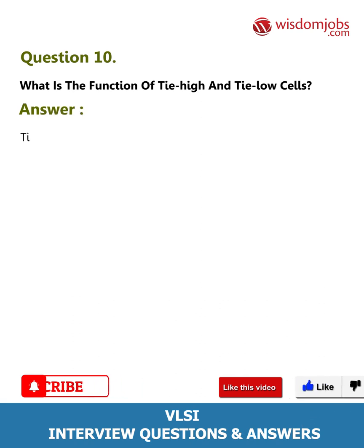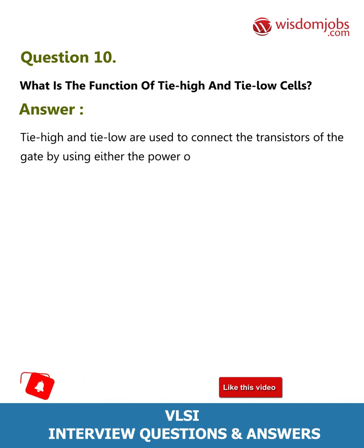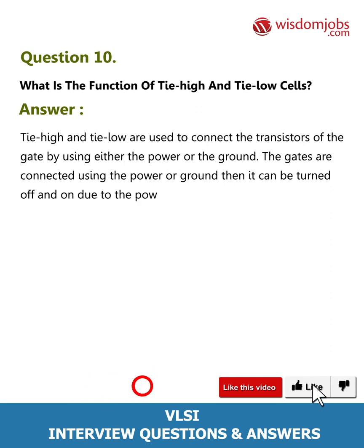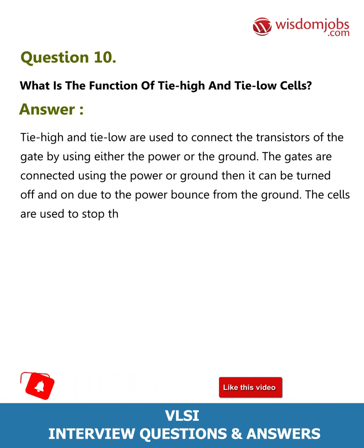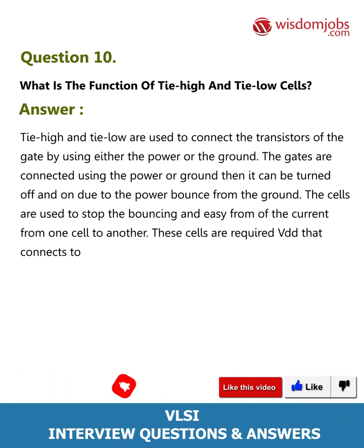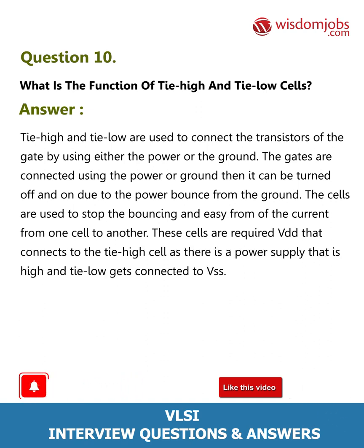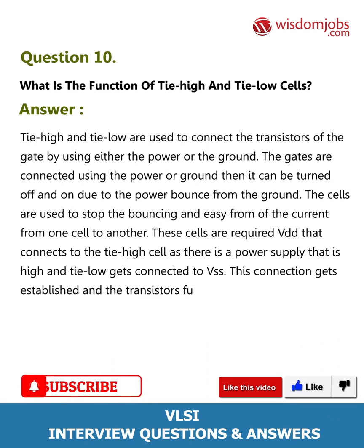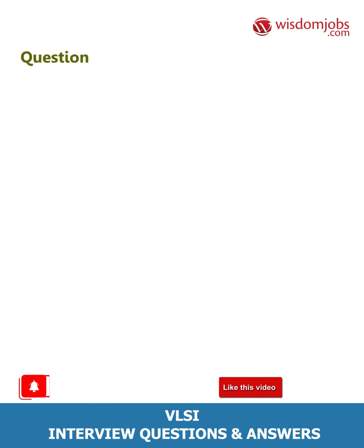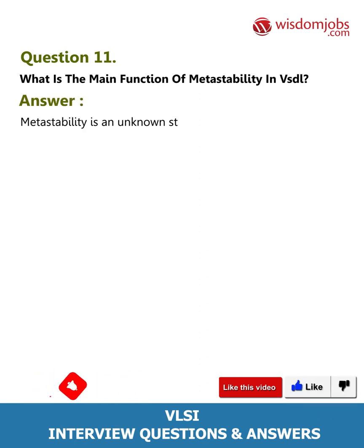Question 10: What is the function of tie high and tie low cells? Answer: Tie high and tie low cells are used to connect the transistors of the gate using either power or ground. When gates are connected using power or ground, they can be turned off and on. These cells stop the bouncing of current from one cell to another. Tie high cells connect to VDD (high power supply) and tie low cells connect to VSS, allowing transistors to function properly without ground bounce.